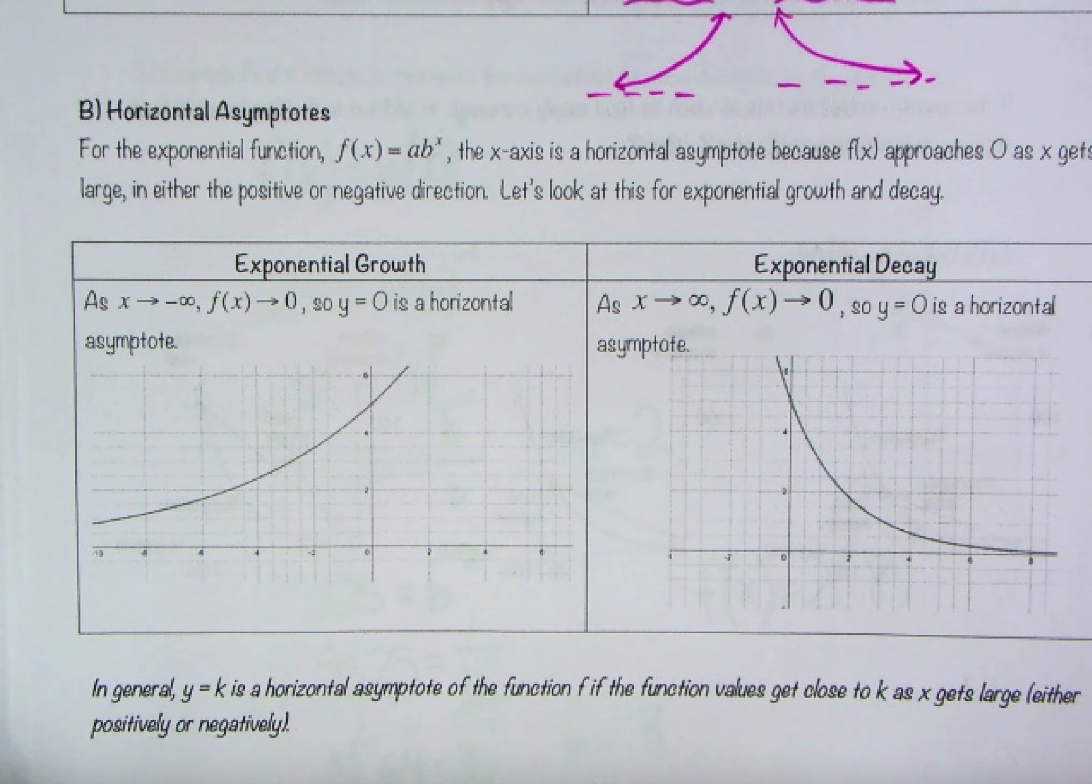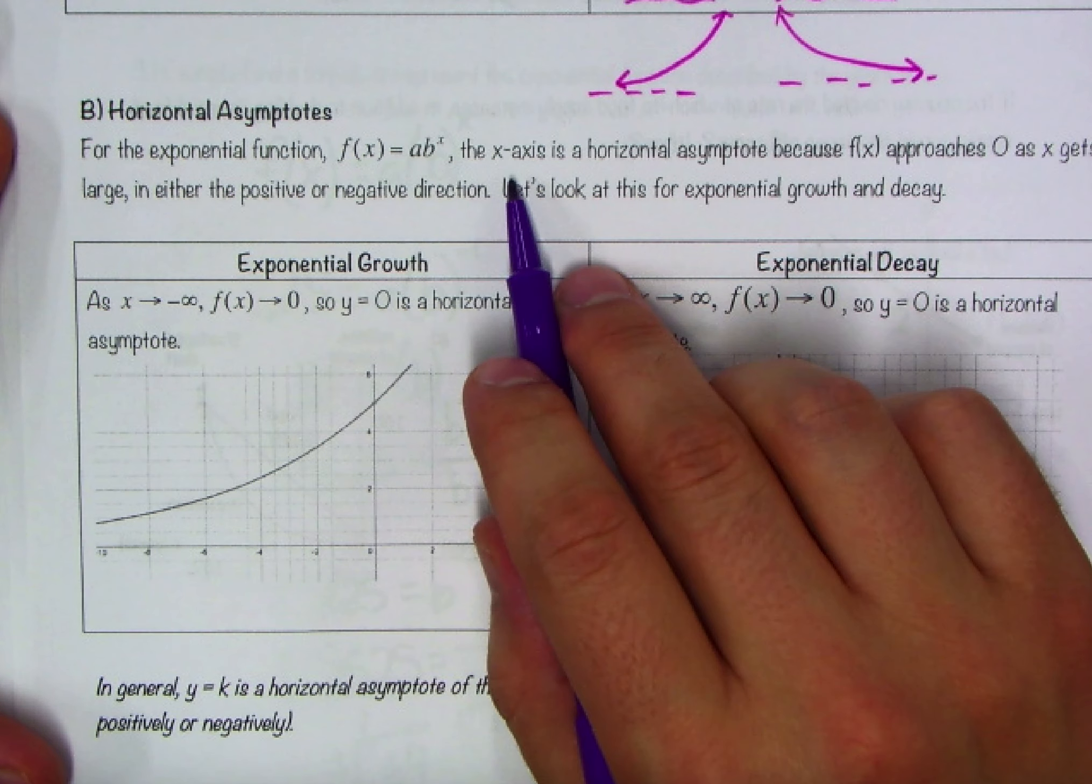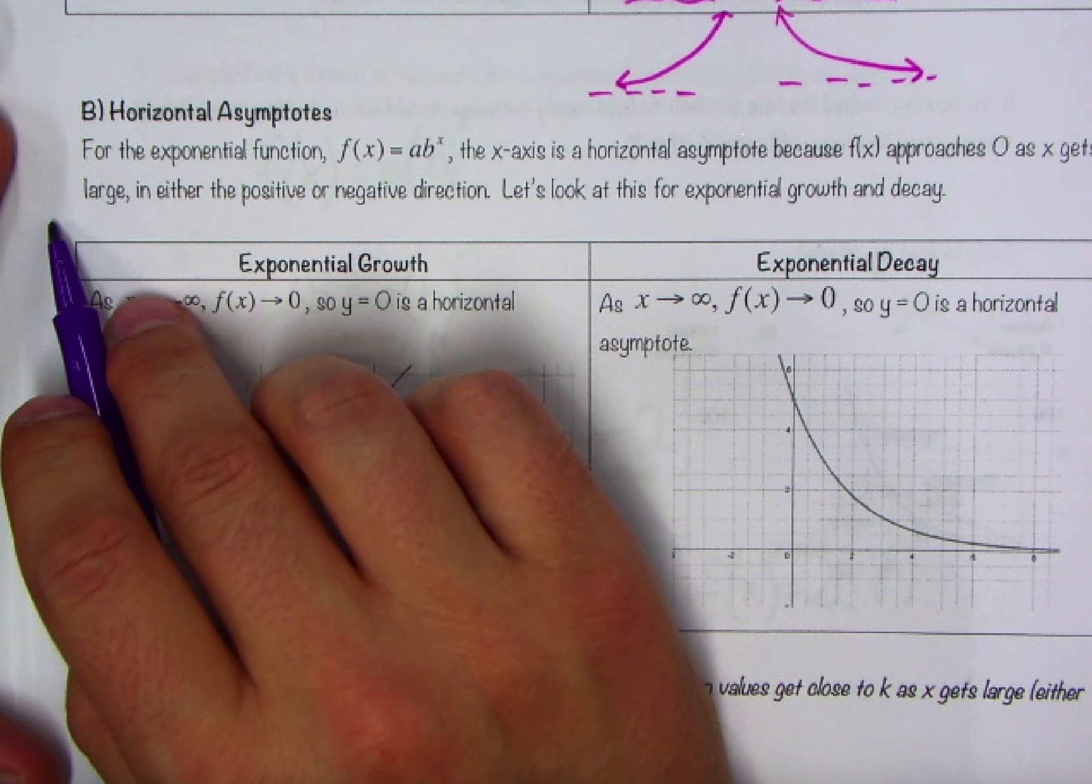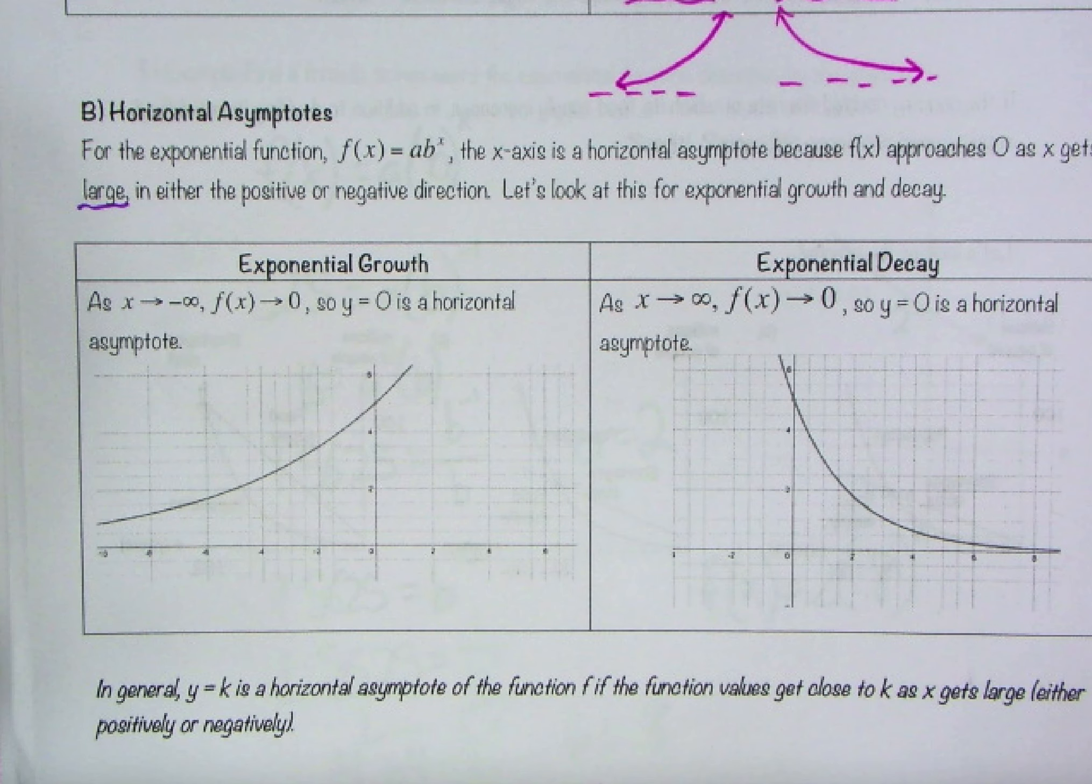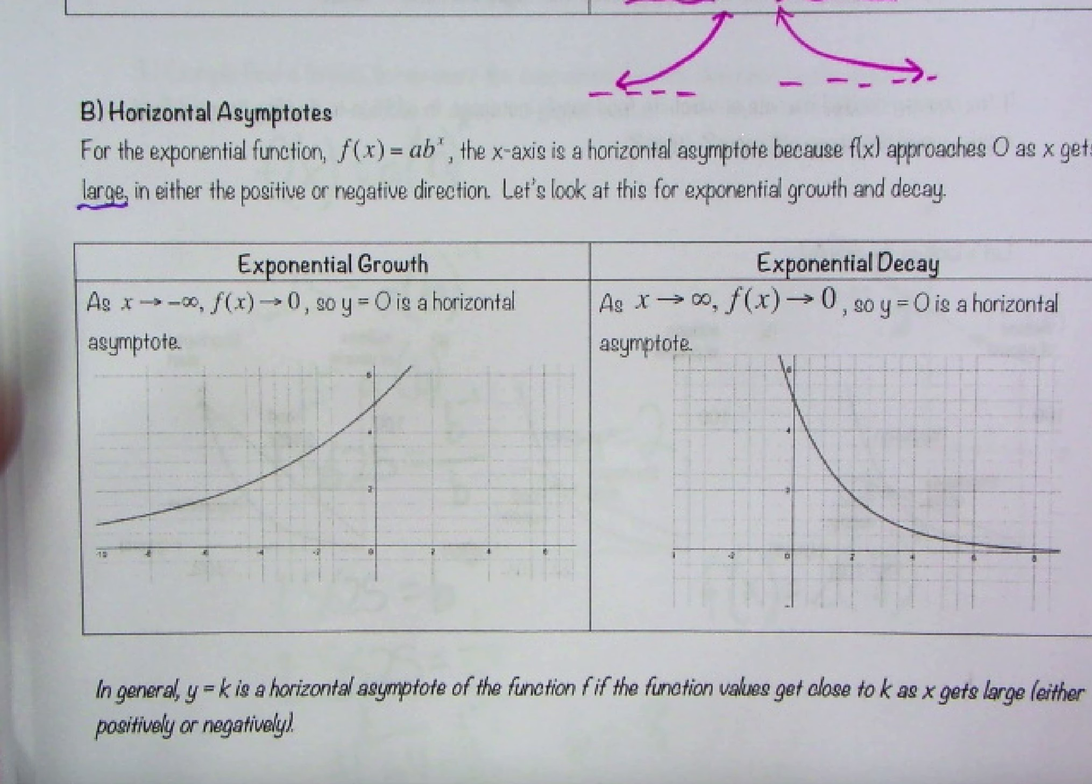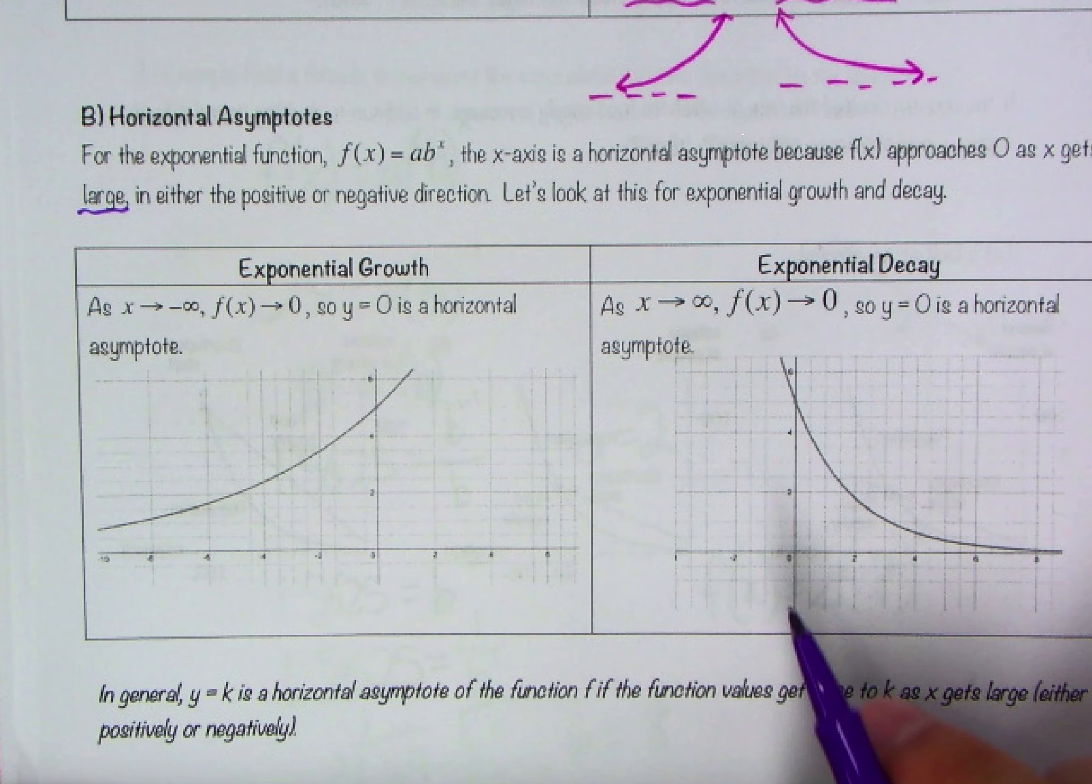We also talked about how in either case you're going to have this horizontal asymptote. Either to the left in the case of growth or to the right in the case of decay, we will approach a finite value. I think it's important that we understand how these horizontal asymptotes work.